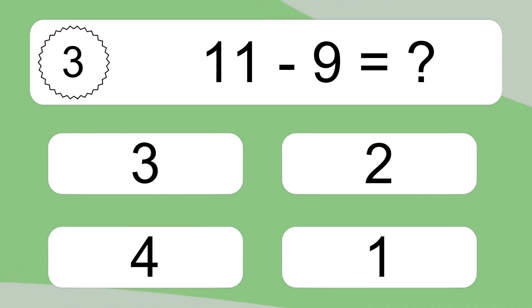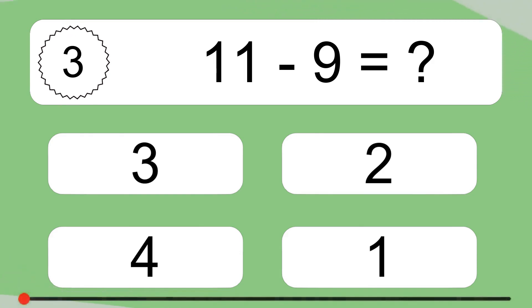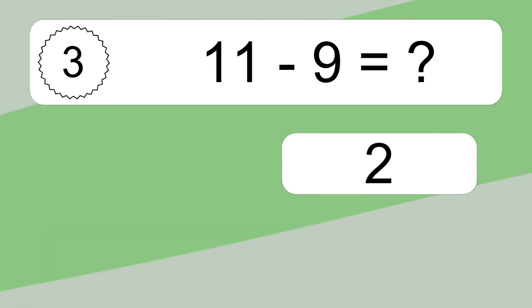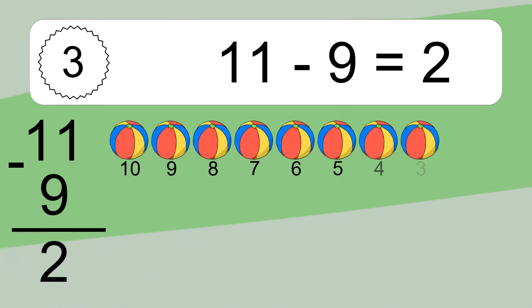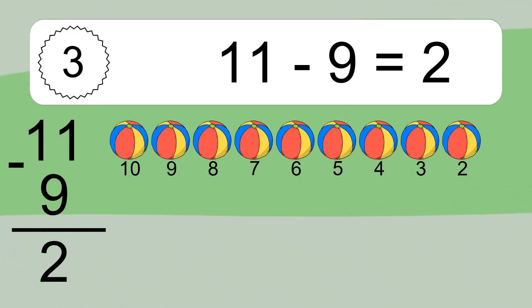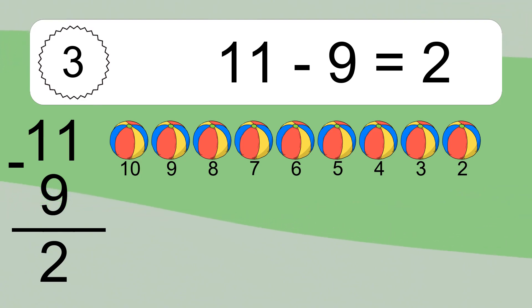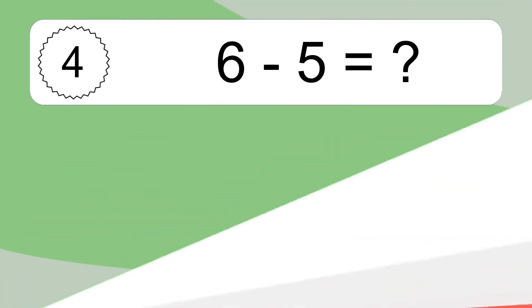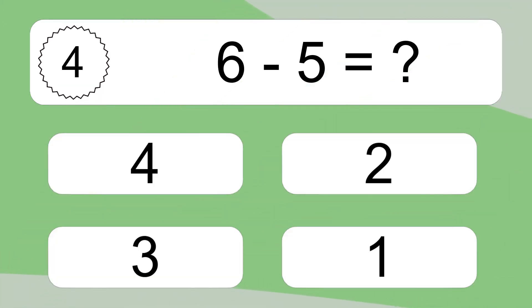11 minus 9 equals what? 11 minus 9 equals 2. Let's count it: 10, 9, 8, 7, 6, 5, 4, 3, 2.